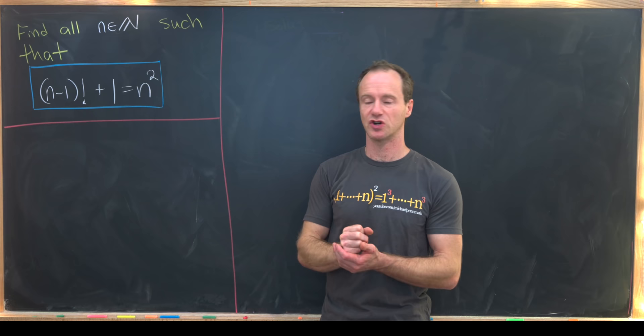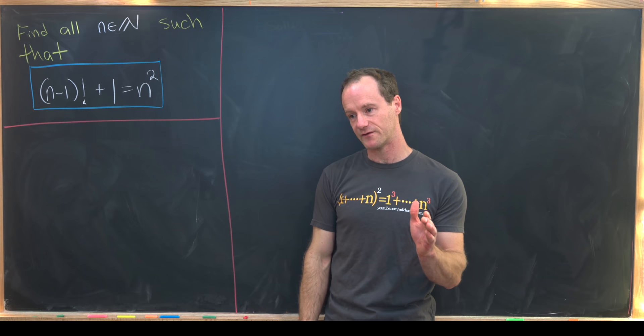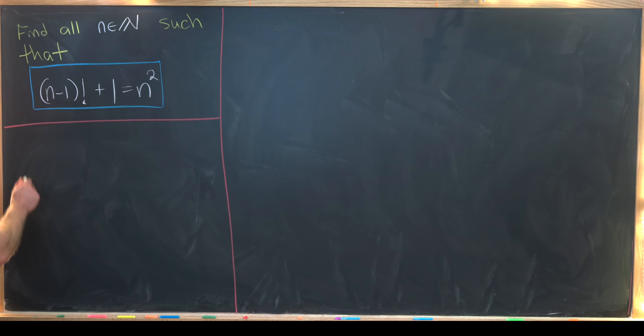We just need to figure out when it starts being always larger and then we know there's no solution after that point. Hopefully that's a small enough number that we can just check cases under that number. So how might we do that?